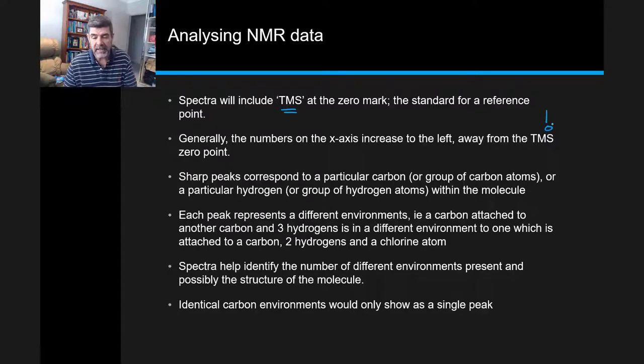What happens then is the numbers will move away from that zero mark to the left on the x-axis, and the sharp peaks will correspond to particular carbons or hydrogens within the molecule.